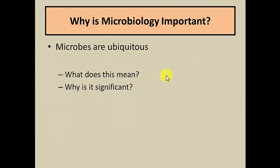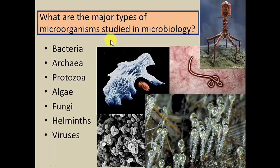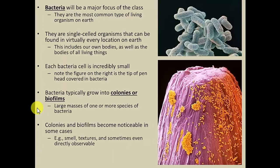Microbes being ubiquitous means that everywhere we go we will find some kind of microbe. What we tend to find most commonly are the bacteria — they tend to be the most common type of living organism on Earth. These microbes are partly defined by the fact that they are single-celled and found virtually everywhere. Bacteria are very, very small — every day we come in contact with probably millions or billions of them and never know it.